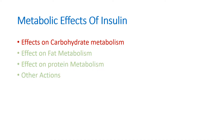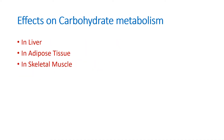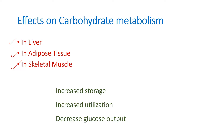Effect on carbohydrate metabolism. Mainly three organs are under the influence of insulin: the liver, the adipose tissue, and the skeletal muscle. The main function of insulin is to increase the storage of glucose and increase its utilization, thereby decreasing glucose output. That is how insulin decreases the blood glucose level.